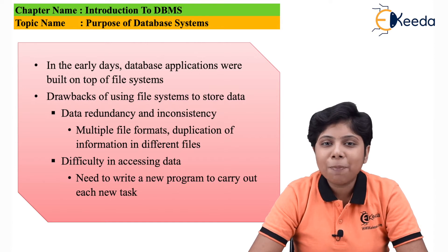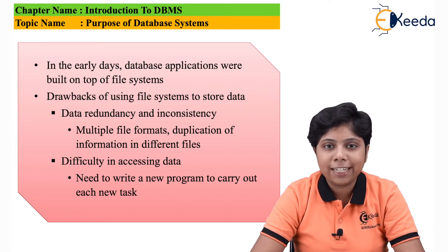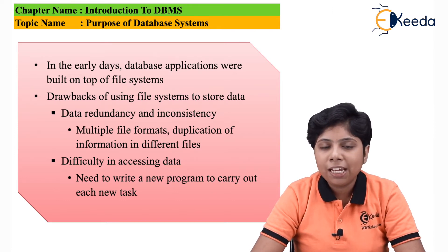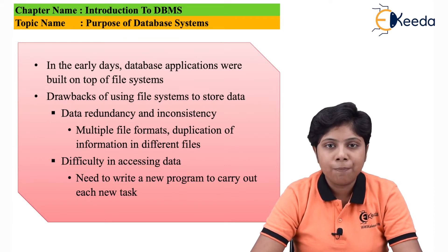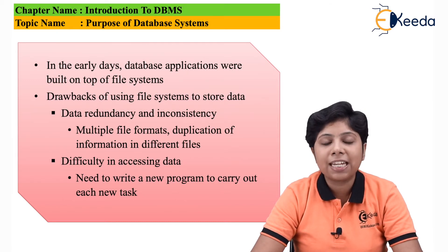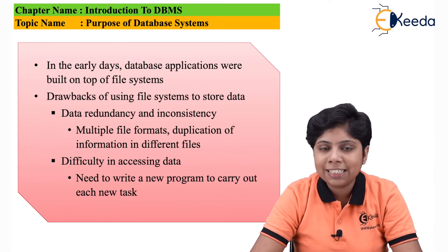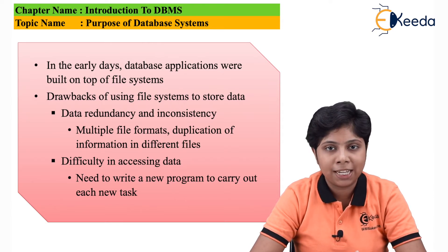When we are adding data to the maths department, it may happen that the contact number of the student changes. We then need to update it in both the music department and the maths department. If there is an error and only the maths department file gets updated, the music department will contain inconsistent data for that student. So data redundancy and inconsistency is a big and important issue in file-type processing.